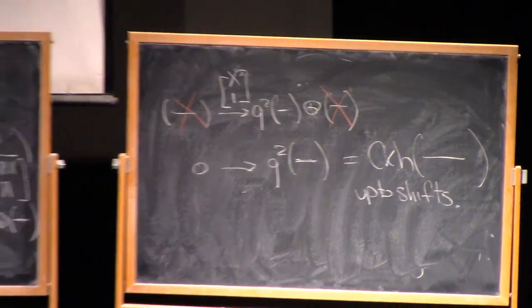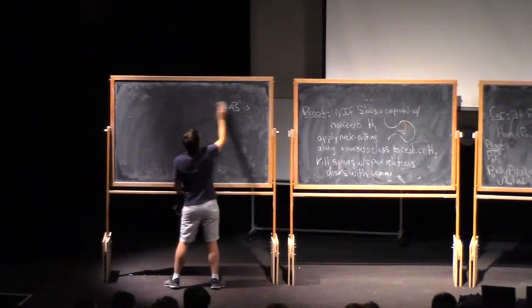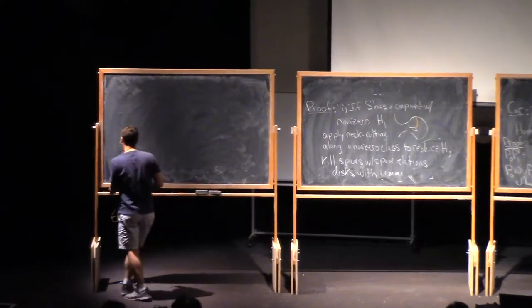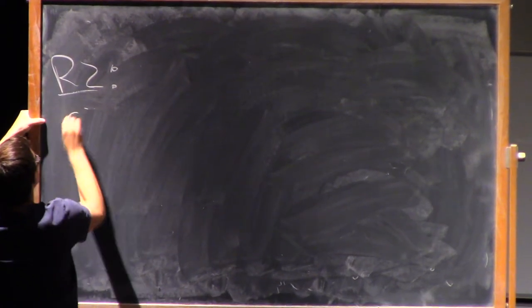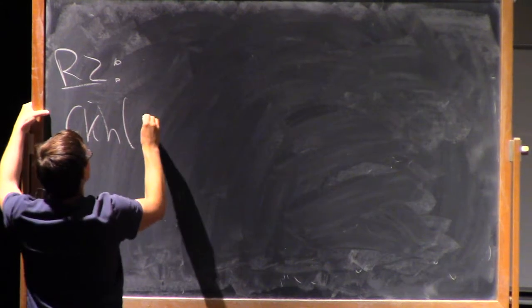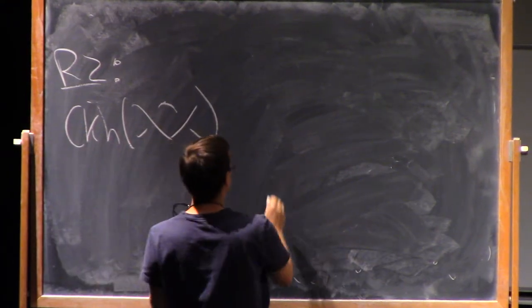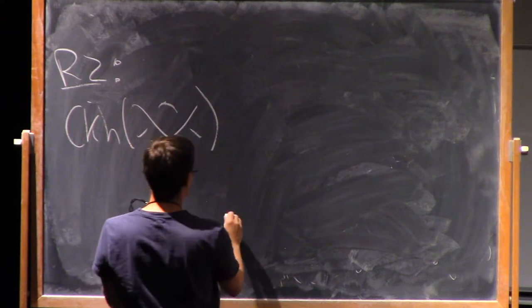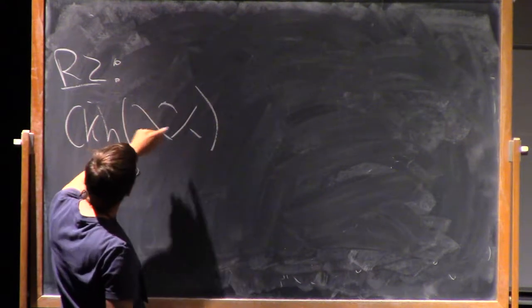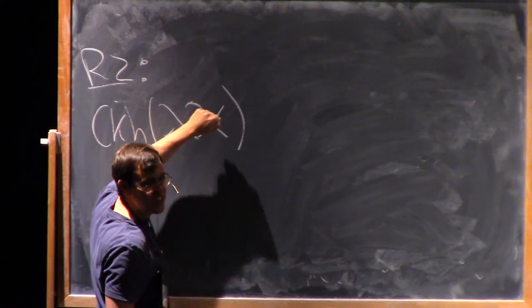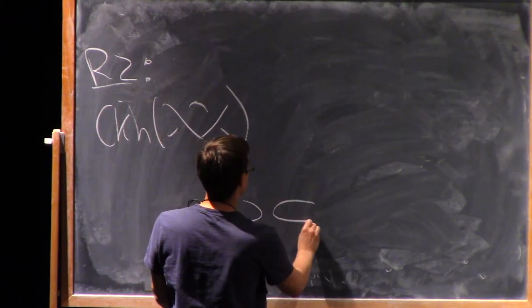Let's try the Reidemeister II move. Be a little bit quicker with that, but it's worth looking at. So say I look at CKh of this diagram here. This is a Reidemeister II diagram. Let's just draw the cube of resolutions. So down here, I'm going to get a diagram. I give this the zero resolution, and I have to be very careful here. This crossing does not look like this one. I have to make sure that I turn my head 90 degrees when I give this the zero and the one resolutions.